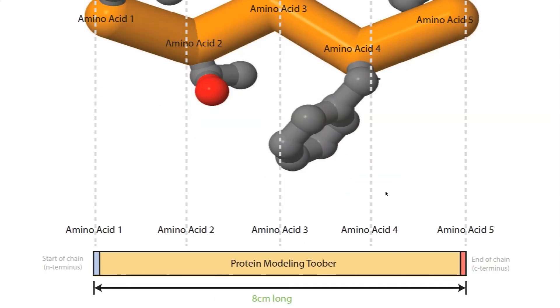If we scroll down a little further, we can see this applied to one of the modeling tubers. Again, even though you're technically showing all five amino acids, because of the way J-mol renders it, removing that amino group at the beginning of the first amino acid and the carboxylic acid group off the end of the last amino acid, your tuber will actually be one amino acid length shorter than the full number, so 8 centimeters long in this case.